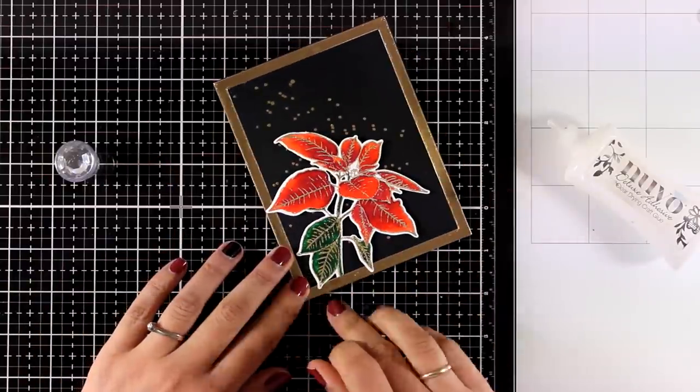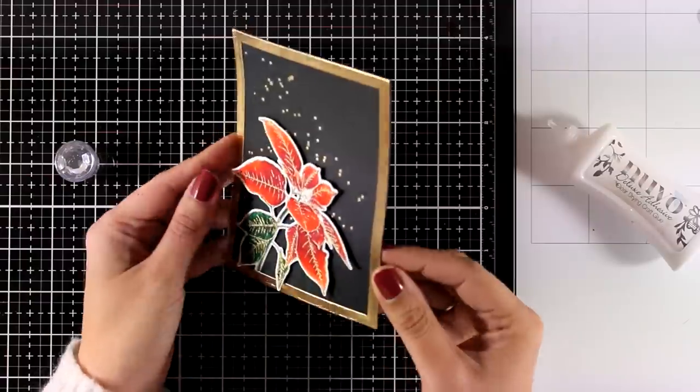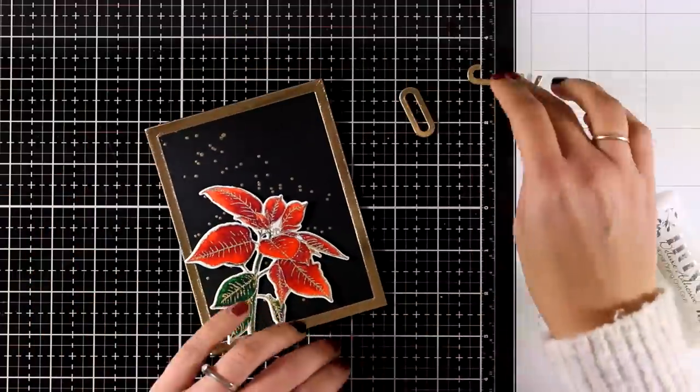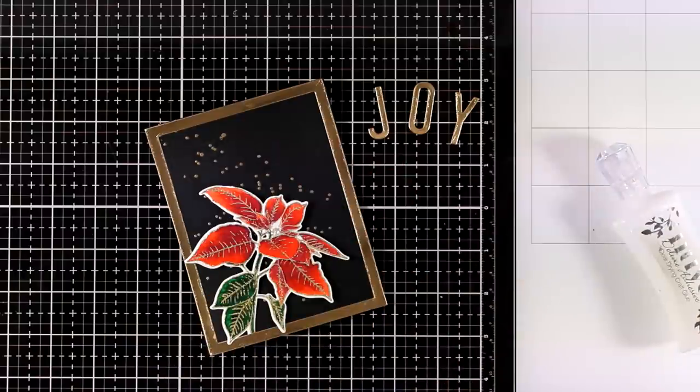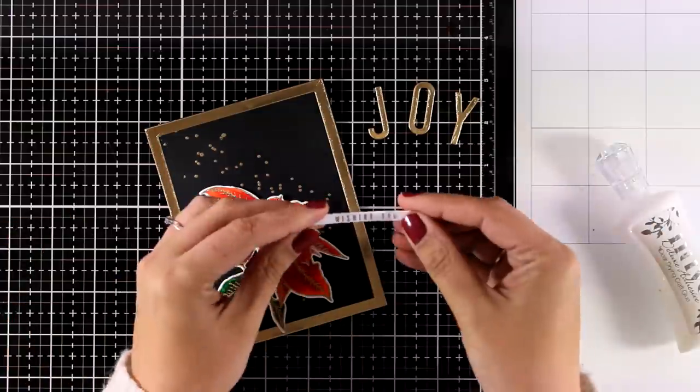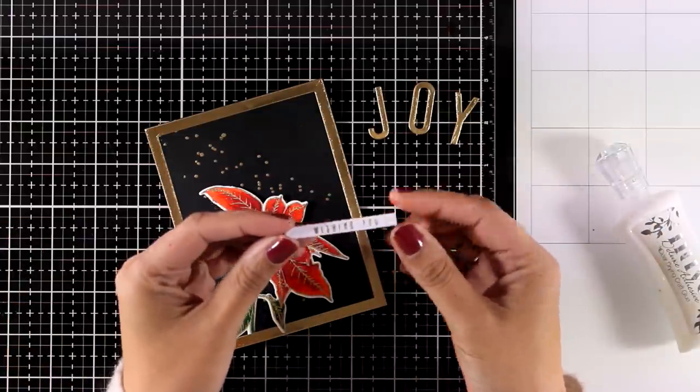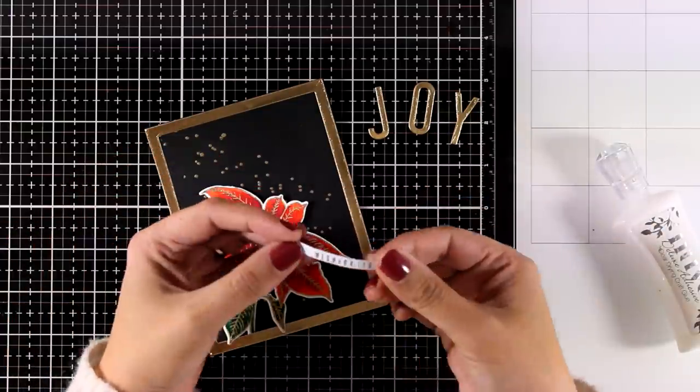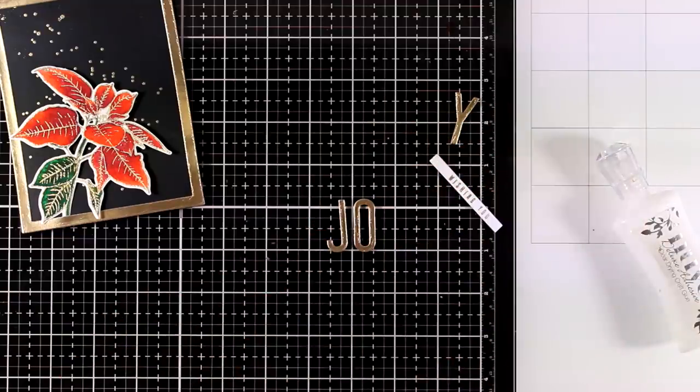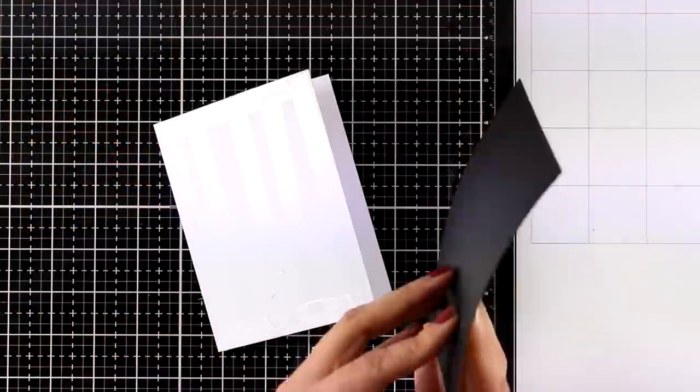And now all I need to do is to add my sentiment. For that I die cut three letters that spell out the word joy, out of the same gold cardstock. And I used the Fine Alphabet die. And to complete my greeting I also stamped the wishing you using the embossing powder, the gold embossing powder, on a very thin strip of white cardstock. So putting everything together here.